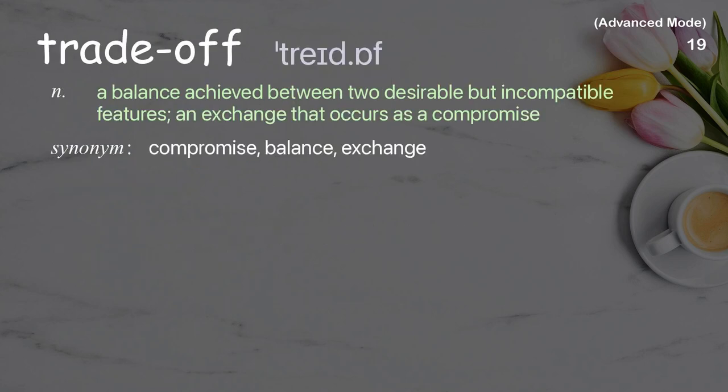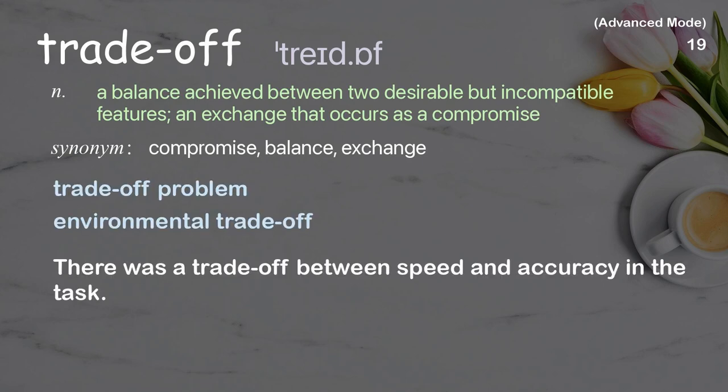Trade-off: a balance achieved between two desirable but incompatible features; an exchange that occurs as a compromise. Examples: trade-off problem, environmental trade-off. There was a trade-off between speed and accuracy in the task.